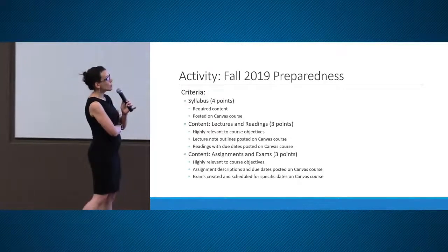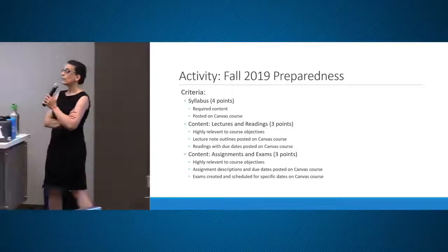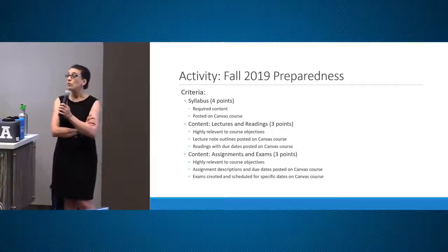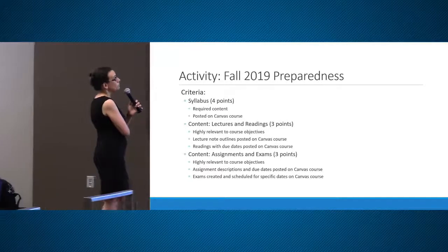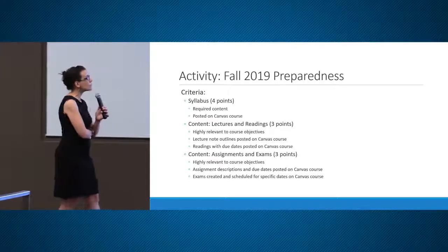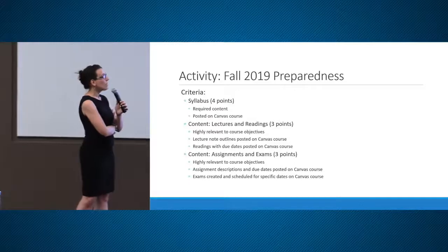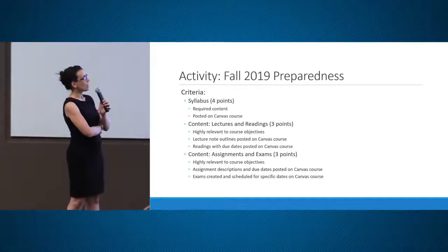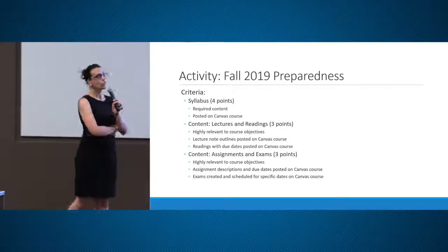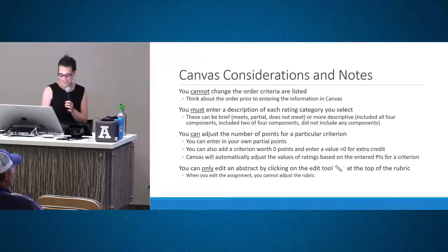We broke each of those three criteria further down to describe what would show us that the criterion is met. For the syllabus, we'd want to know you have all required content and it's posted on Canvas. For lectures and readings, it's quality and objective measure — lecture and reading content should be highly relevant to course objectives. Do you have lecture note outlines posted on Canvas? Do you have all your readings and due dates posted? Let me go show you the example.